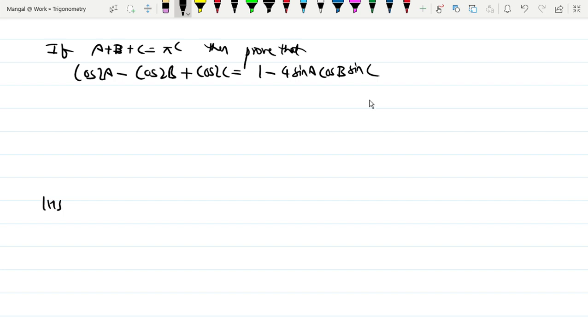I mean left-hand side should be equal to right-hand side. We'll use the formula cos(c) - cos(d). So the left-hand side will be cos(2a) - cos(2b) + cos(2c). We'll use the formula cos(c) - cos(d) which equals -2sin((c+d)/2)sin((c-d)/2).